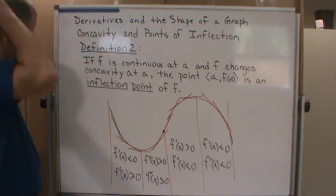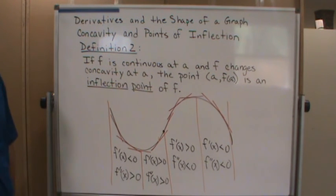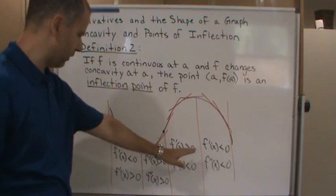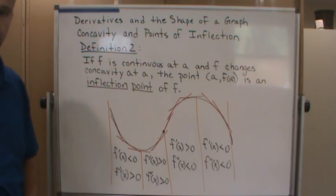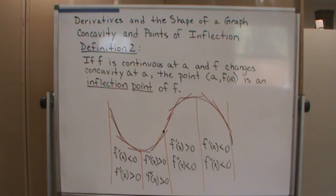So this gives us a test that we can use for finding concavity. Let's use this information, let's use the first derivative and the second derivative to help us find these inflection points and also understand the concavity of the curve at the different points along the domain. Okay, see you next time.